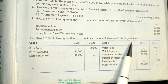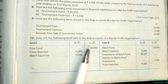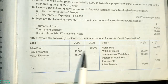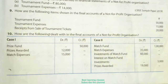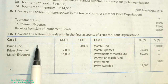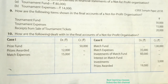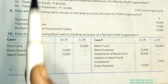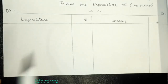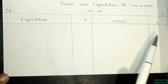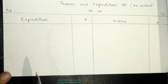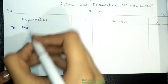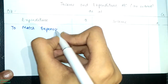Last question of this video: how are the following dealt with in the final accounts of a not-for-profit organization? Case 1 involves prize awarded and prize fund. Since match expenses are not given, we go to the income and expenditure account on the debit side. For the income and expenditure account extract, only match expenses of ₹15,000 are shown on the expenditure side. For the balance sheet, the prize fund of ₹50,000 is shown on the liability side as opening balance, then prize awarded of ₹12,000 is deducted, leaving a balance of ₹38,000. No asset side entry is needed.